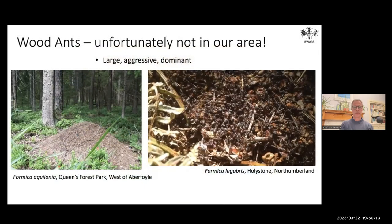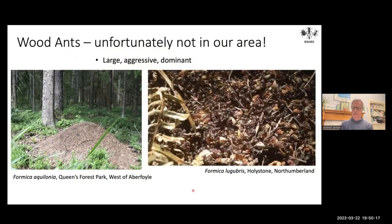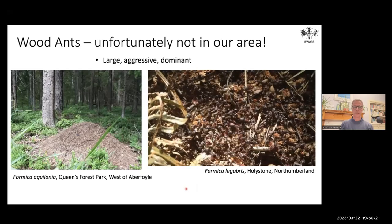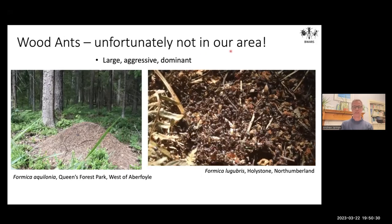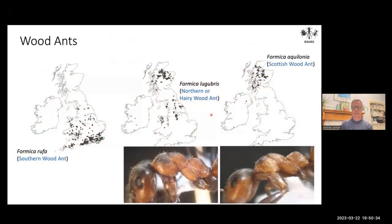Many people think of wood ants as the quintessential ant — the Formica species that form large mounds in the Highlands. Unfortunately we don't have those in our area, and it's rather a vain hope that we will. The two species present in Scotland are Formica lubrubris in Northumberland and Formica aquilonia — the Scottish wood ant — in Queen Elizabeth Park and near Aberfoyle. These ants are so conspicuous that it's very hard to think they could be overlooked if present.